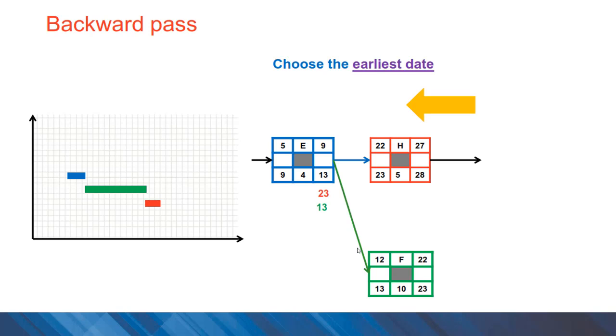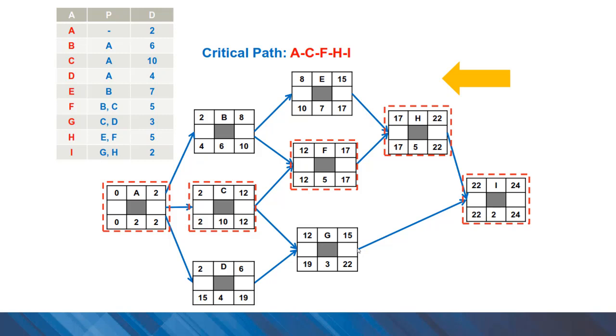As you can see in this example, for activity E we have two choices for late finish time: 13 coming from activity F and 23 days coming from activity H. The rule in the backward pass is to use earlier dates. Here we can calculate the late start and late finish values in the backward pass. A good control for us is reaching zero as the late start time for activity A when we reach the end of the network.